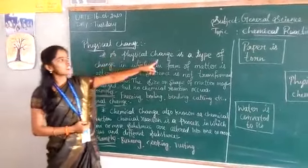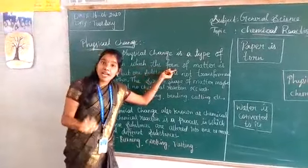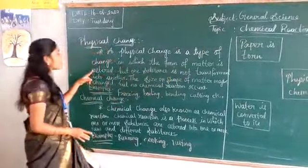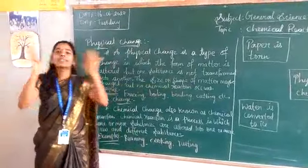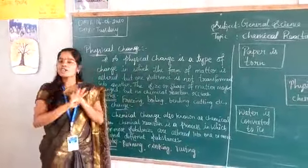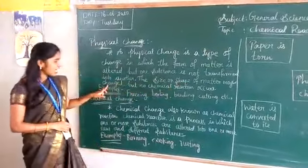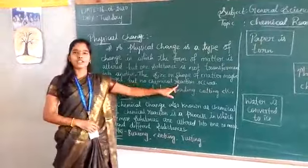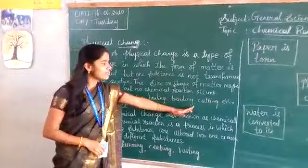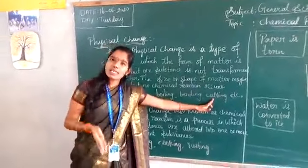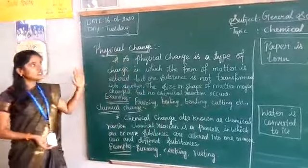A physical change is a type of change in which the form of matter is altered, but one substance is not transformed. Physical appearance only changes; it does not change entirely. The size or shape of matter may change but no chemical reaction occurs. Examples include freezing, boiling, bending, and cutting — if you cut paper it is still paper; it does not become any new substance.